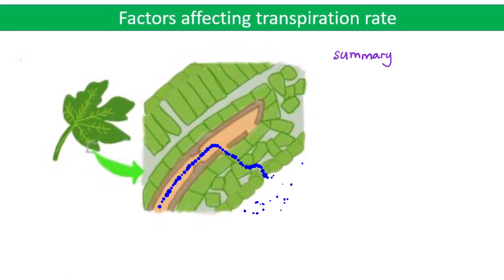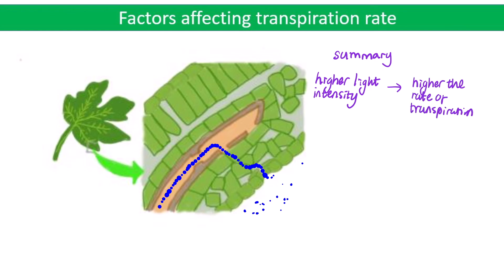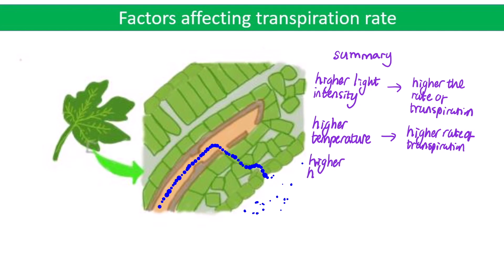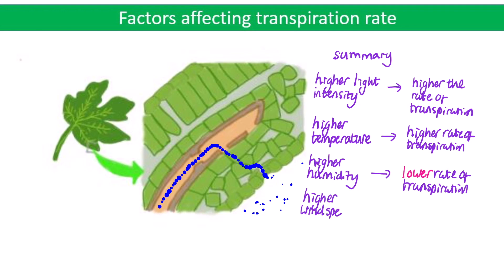A quick summary: the higher the light intensity, the higher the rate of transpiration; the higher the temperature, the higher the rate of transpiration; the higher the humidity, the lower the rate of transpiration; and the higher the wind speed, the higher the rate of transpiration.